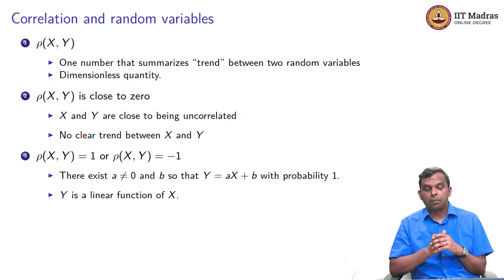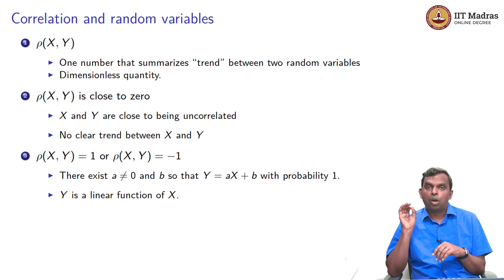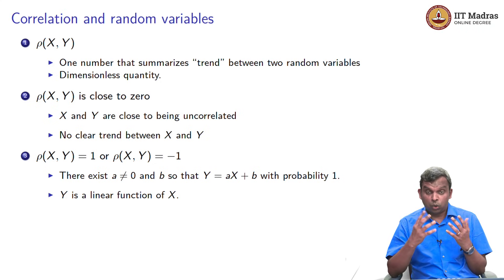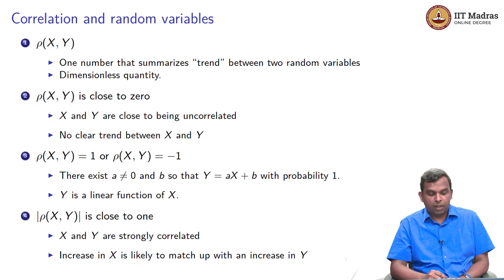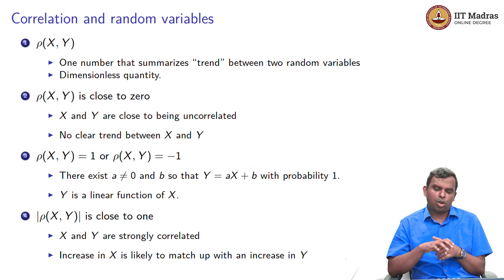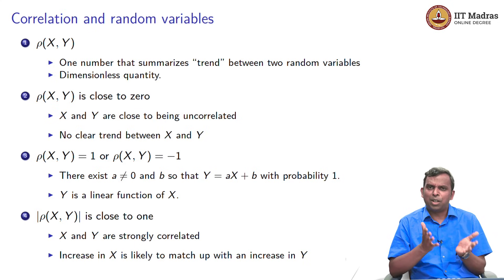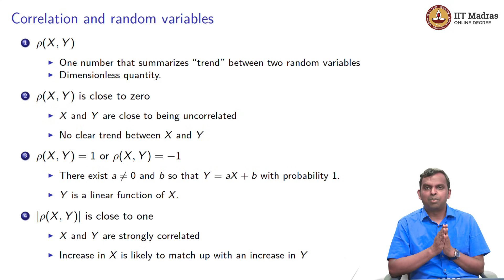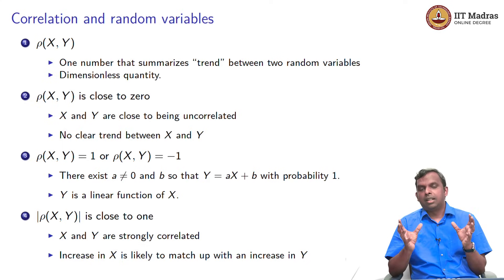If rho becomes equal to 1 or minus 1, then y has a linear dependence on x: y equals ax plus b. If x is given, y is determined as a linear function of x. So if the modulus of rho of xy is close to 1, then x and y end up being very strongly correlated. This kind of understanding of correlation and covariance is important — these are just numbers to quickly understand the trend between two random variables.